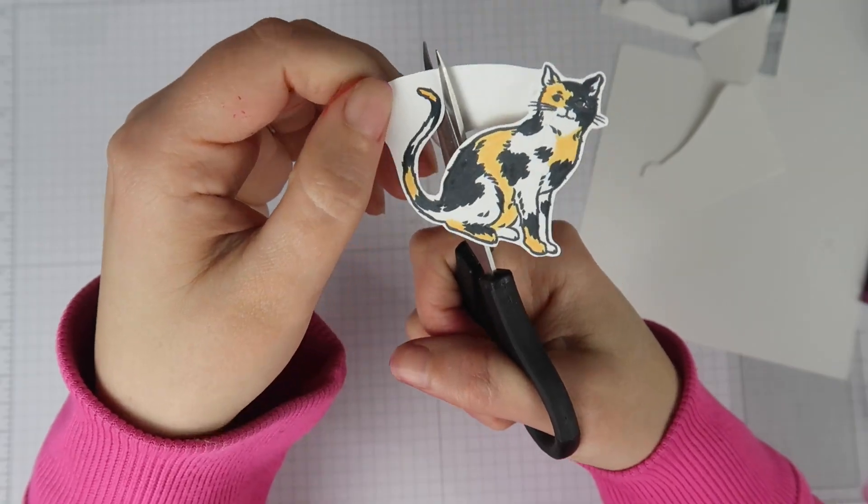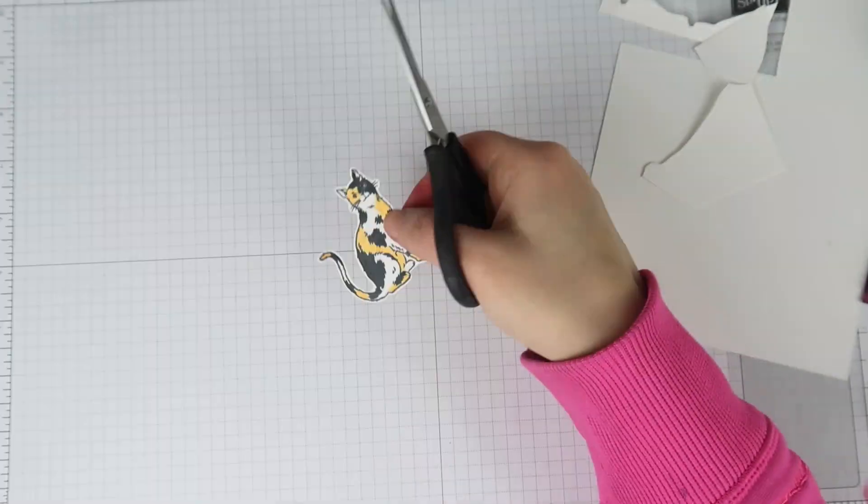And then I just cut this guy out with my scissors leaving a little bit of a white border around the edge.